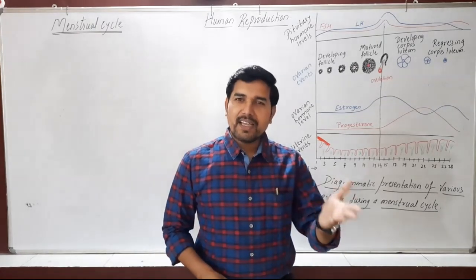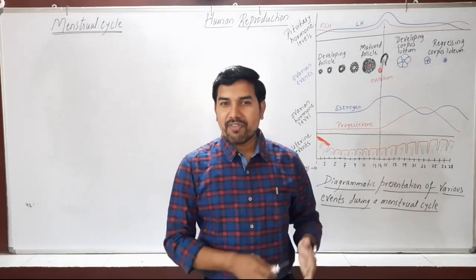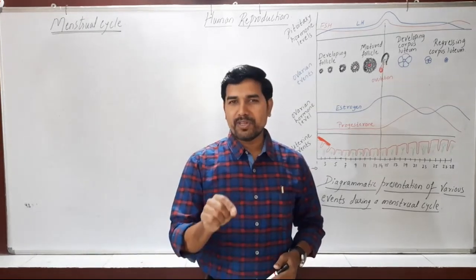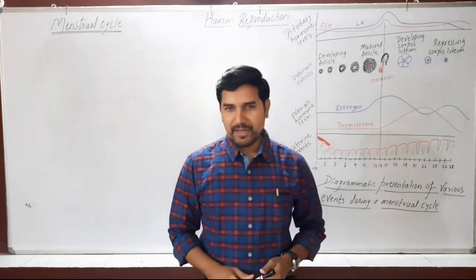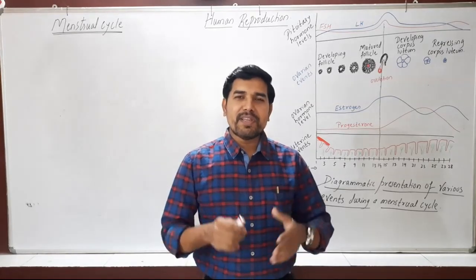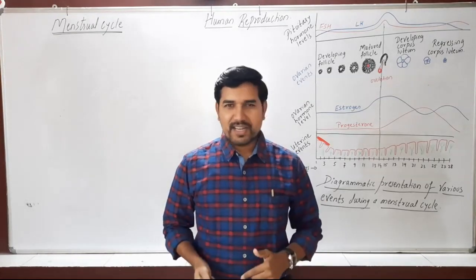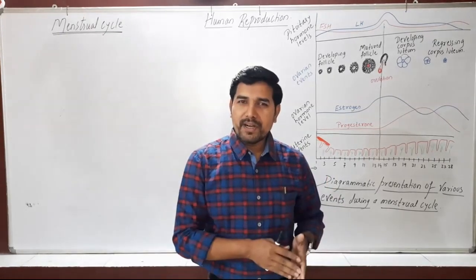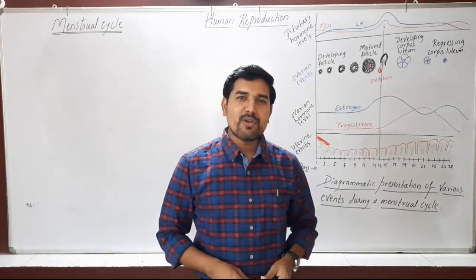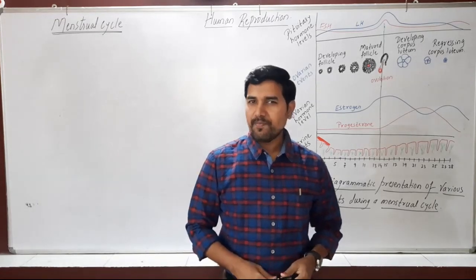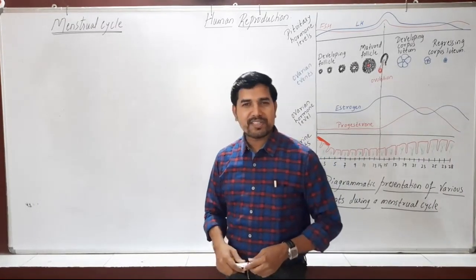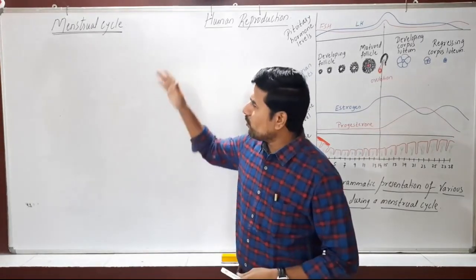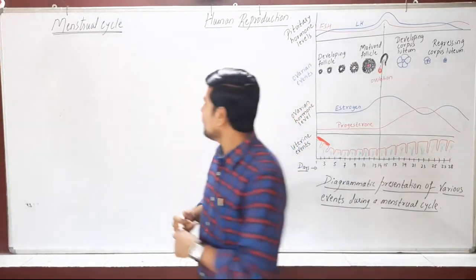Humans also come under primates. The basic difference between the menstrual cycle and the estrus cycle is that in the menstrual cycle there is a release of blood, while in the estrus cycle there is no such release of blood. We are studying the menstrual cycle with respect to humans, so let's look at its definition.